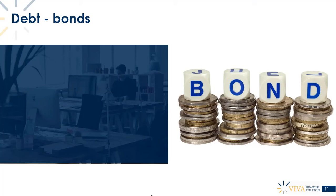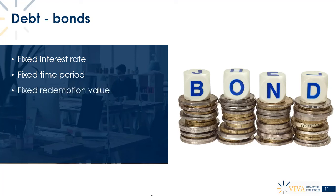Bonds are really just loans from institutions other than banks. Bonds carry a fixed interest rate and a fixed time period — normally a bond would say something like a '2027 bond,' which tells you when you need to pay the cash back. There is also a fixed redemption value, meaning you know exactly how much you're going to have to pay back.